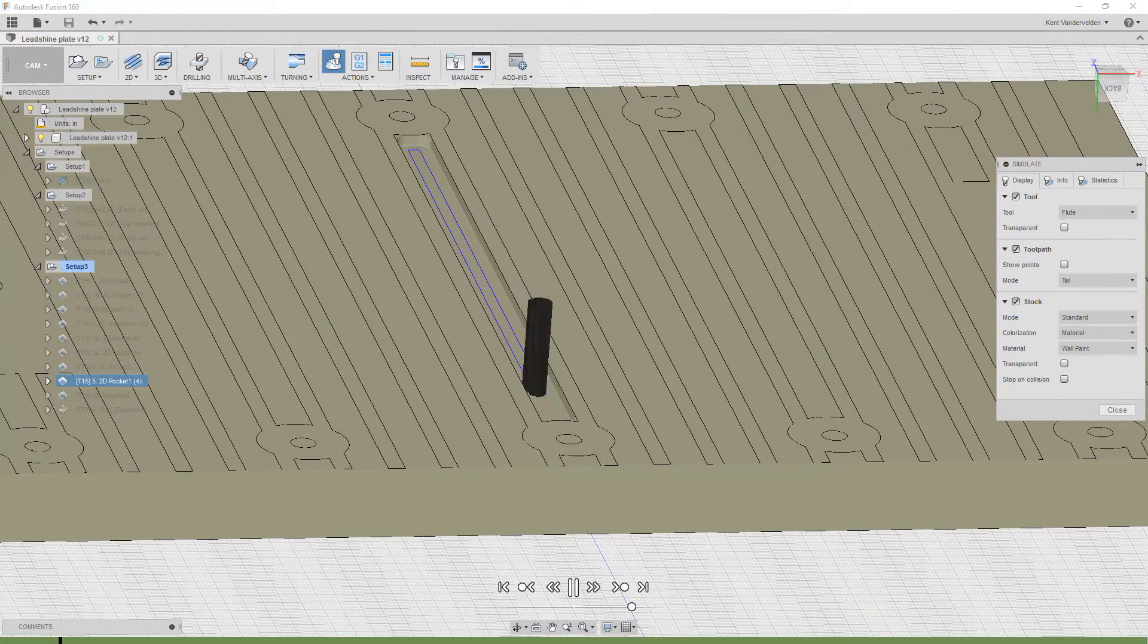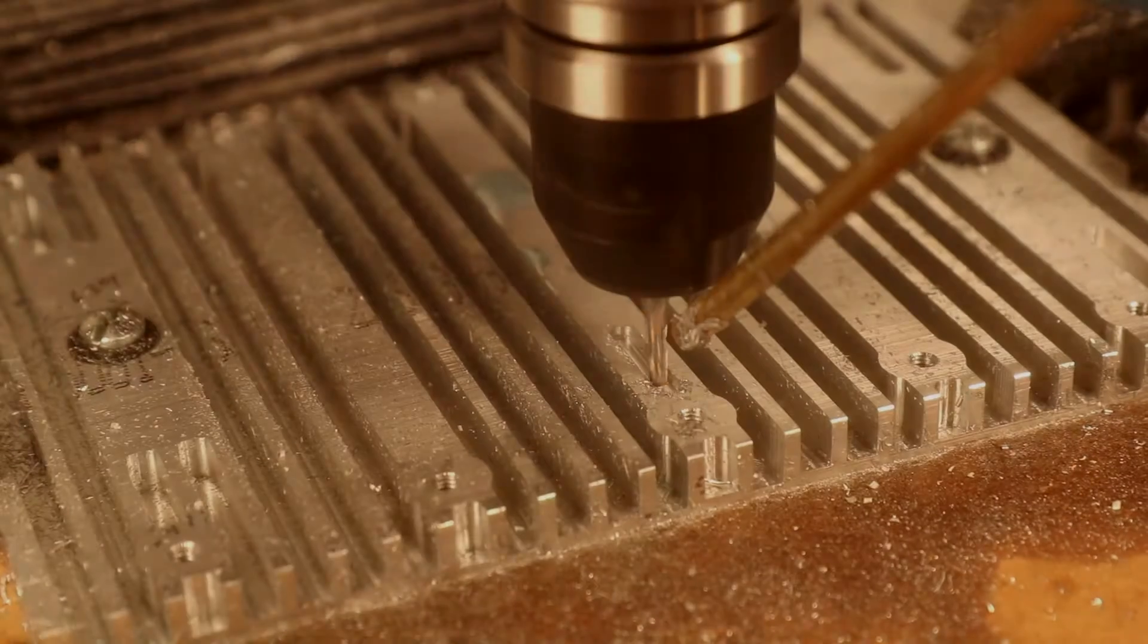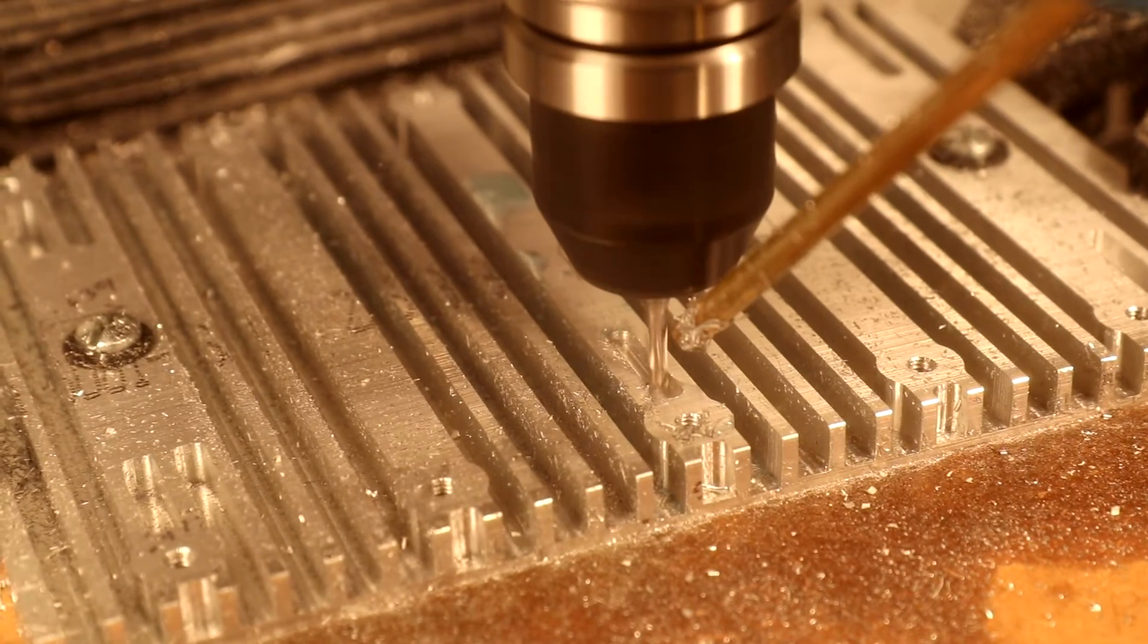The third strategy is a 2D pocketing operation with a ramp entry. This strategy was used in contained slots where I was not able to get adaptive clearing to work. I tried to use a helix entry with 2D adaptive clearing but never got it right. Pocketing worked but would like to learn a faster method.